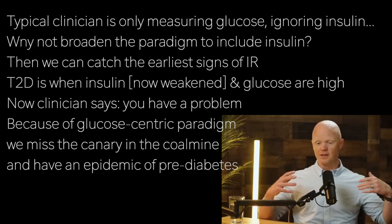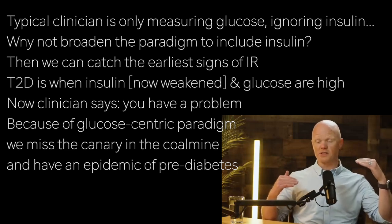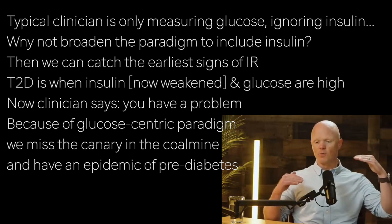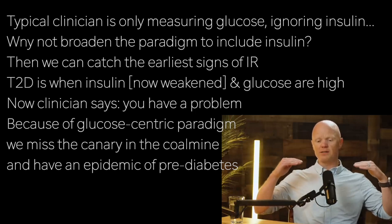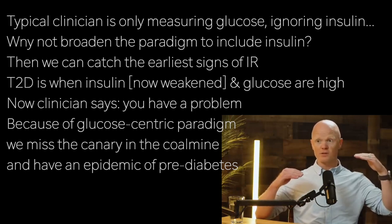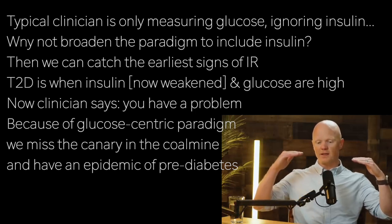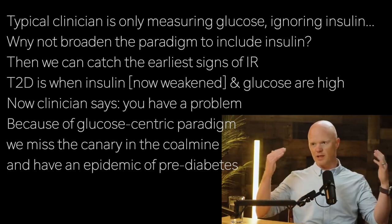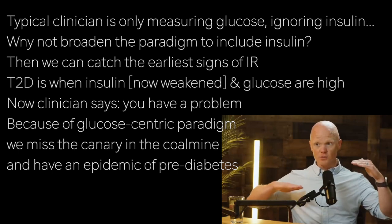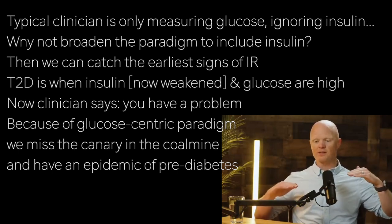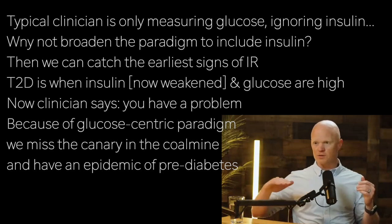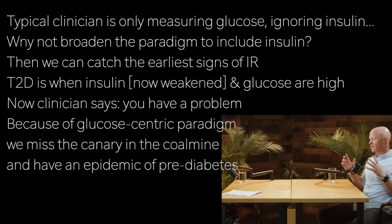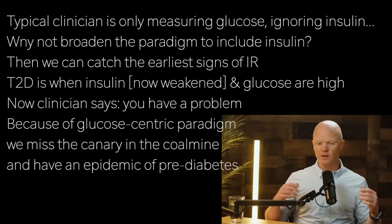If we were able to broaden the paradigm a little bit and include insulin, then all of a sudden we are measuring the earliest signs of insulin resistance, because it is insulin itself that ought to be measured when we're trying to get a view of the patient's metabolic health. To state it another way: type 2 diabetes is when insulin is high but it's starting to lose the war and now glucose rises as well. But in its earliest stages, glucose is still normal — there's this cold war happening in the body where insulin levels are two, three, or four times higher than they used to be. It's working well enough to keep glucose in check, and so the glucose-centric paradigm has us miss the earliest metabolic canary in the coal mine, which is insulin.